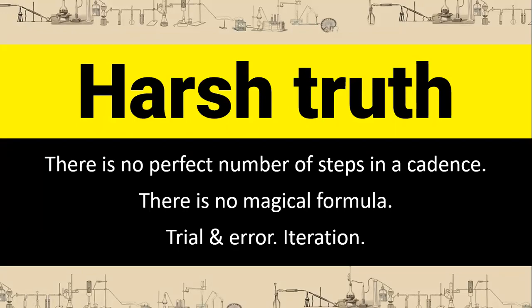The harsh truth when sending these emails, especially outbound cold emails — but also when marketing has thousands of leads in the CRM who aren't responding to nurturing anymore — is that there's no perfect number of steps in a cadence. A cadence is basically your campaign: the number of emails you send until you give up. There's no formula; it's all trial and error and iteration. You have to constantly refresh, A/B test, maybe change the subject or try different personalization inside the email.